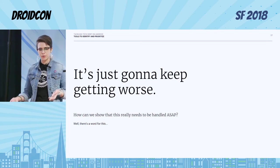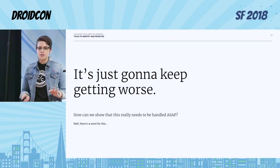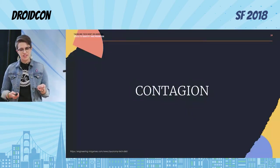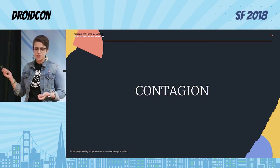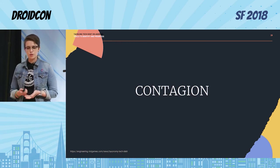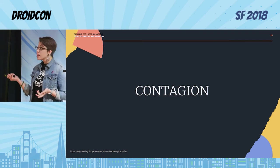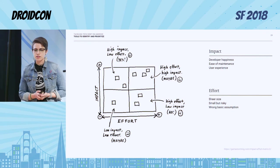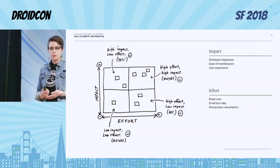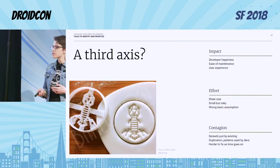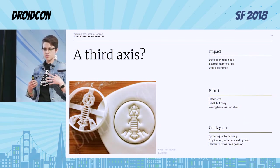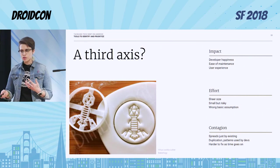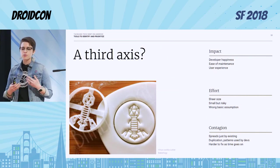But you know it's just going to keep getting worse. We see what happens in the past and know it's going to keep spreading. We have to show and quantify that this really needs to be handled ASAP. Like a virus, there's a word for this: contagion. This concept comes from a great blog post from Riot Games about their taxonomy of tech debt, where they have effort, impact, and contagion — trying to put a value on the risk of something spreading through your code base. Contagious tech debt spreads just by existing. It can be spread via duplication, maybe a pattern that gets used over and over by devs, and new devs don't know they're not supposed to use it. It becomes harder to fix as time goes on.